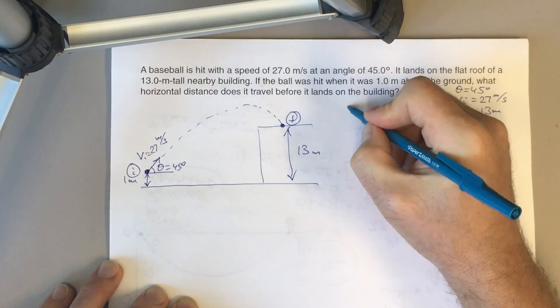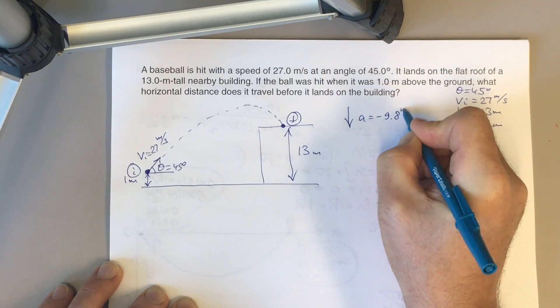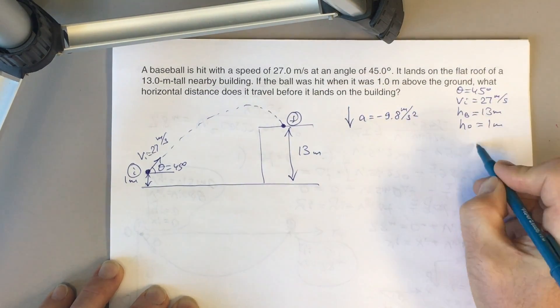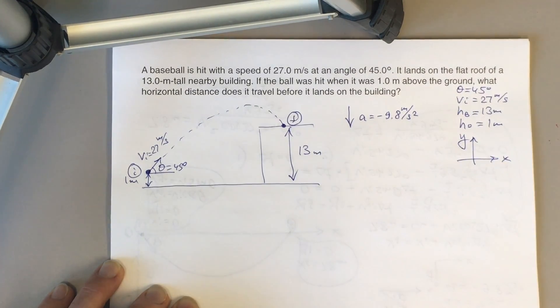We have gravity acceleration a equals minus 9.8 meters per second squared. Again, because we always pick the y-axis upward and x-axis to the right, this is why acceleration is negative.